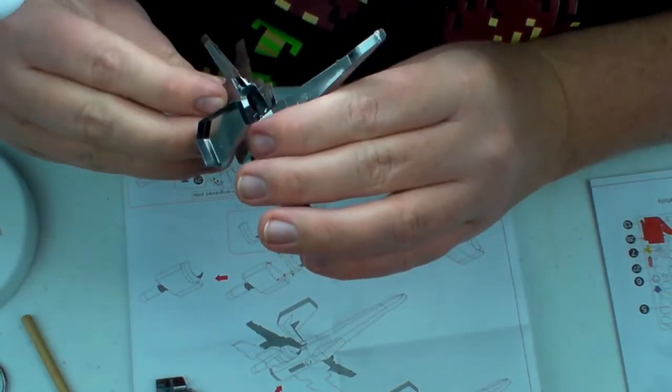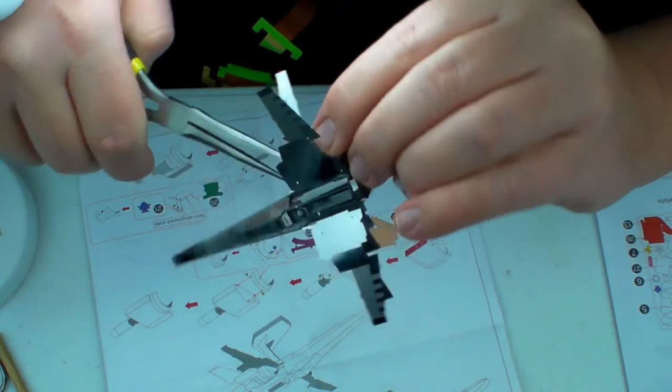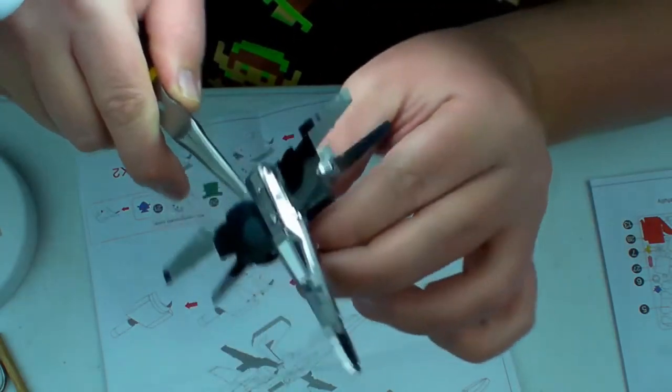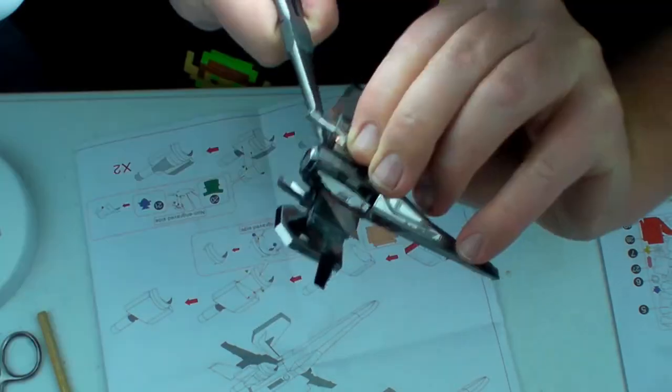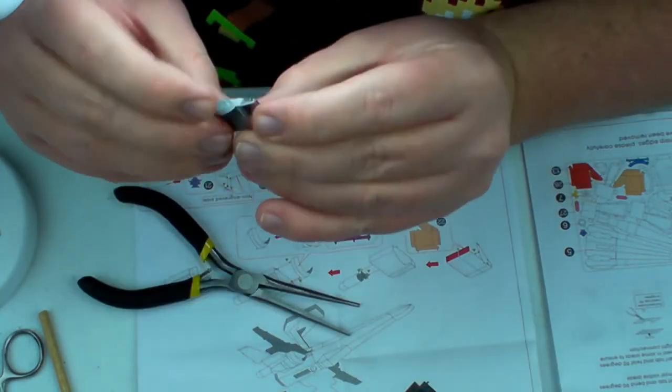I initially twisted the tabs holding the engines on. The instructions say to bend them and bending does look better. I came back later to straighten them out and bend them over. I did the last two engines kind of together.